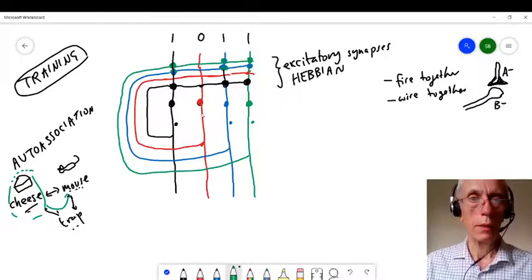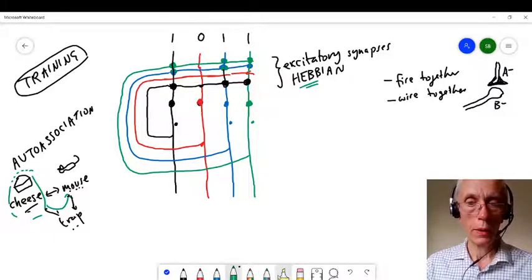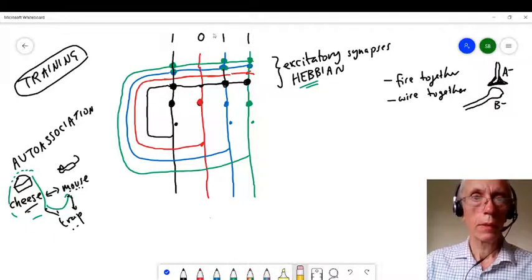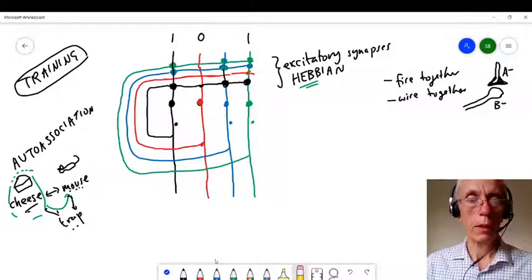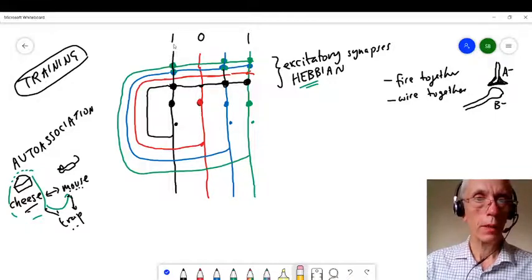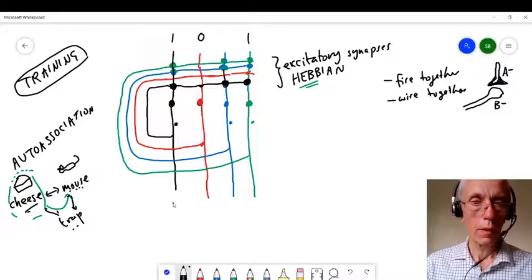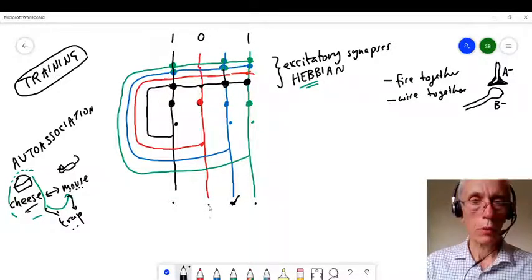So I've trained it now, and by the Hebbian rule, I've strengthened the ones that fire together. Now what I'm going to do is I'm going to present it with just those two stimuli. What's going to happen? Well, first of all, we're going to have a signal coming down here, and a signal coming down here. So we've got these two active, and we want this one to be active, and that one not to be.